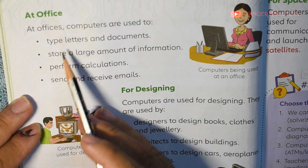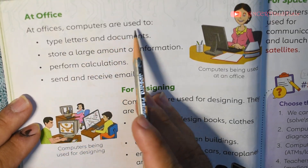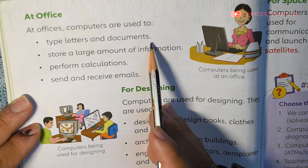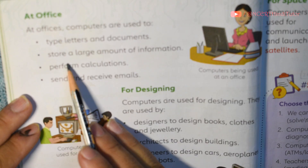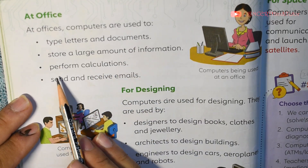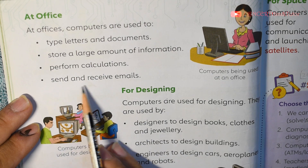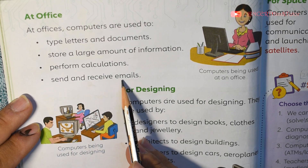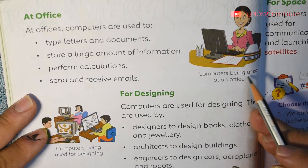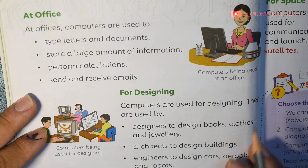At offices, computers are used to type letters and documents, store a large amount of information, perform calculations, and send and receive emails. As you can see in the picture, computers are being used at an office.